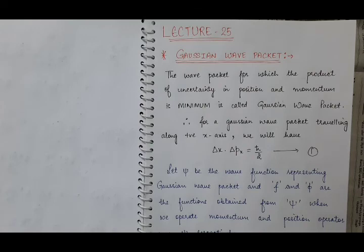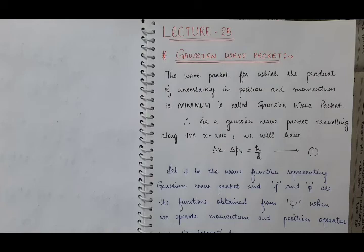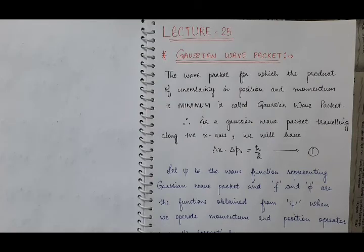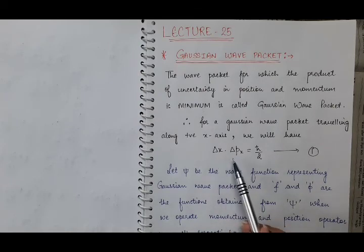As we have already discussed Heisenberg's uncertainty principle, according to it, if any particle is in motion, there will be a wave packet associated with the motion of that particle, and there will be a certain amount of uncertainty in the position of the particle as well as in its momentum. According to Heisenberg, we cannot measure the position and momentum of the particle simultaneously and accurately. The product of the two uncertainties, delta x into delta px, will always be greater than or equal to h-bar by 2.